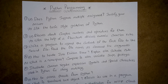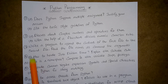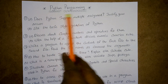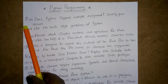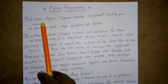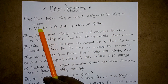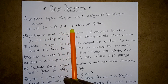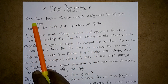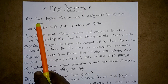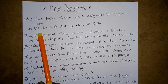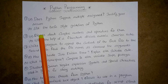How the marks are allotted for each and every question we will discuss in today's class. So these are some questions — Python Programming is the heading. First question: (a) Does Python support multiple assignment? Justify your answer. (b) List the basic style guidelines of Python. This is for seven marks and eight marks respectively.